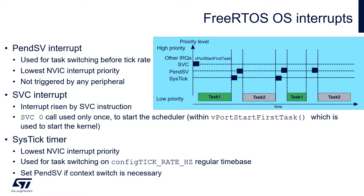PendSV switches the context from the lower priority task to the higher priority task and starts executing the new task. SVC interrupt is again a software interrupt which is called only once at the beginning of the application execution to start the scheduler. It is done within the port start first task function.